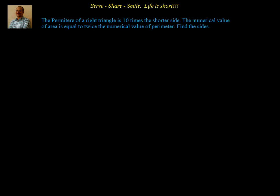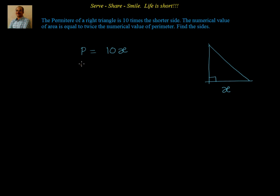We have been given that the perimeter of a right triangle is 10 times the shorter side. Let us take one side of the legs as the shorter side, and say this is x. Let p equal to 10 times the shorter side, so perimeter equals 10x. We have also been told that the numerical value of area equals twice the numerical value of perimeter, so area equals 2 into p, which is 2 into 10x, equal to 20x.